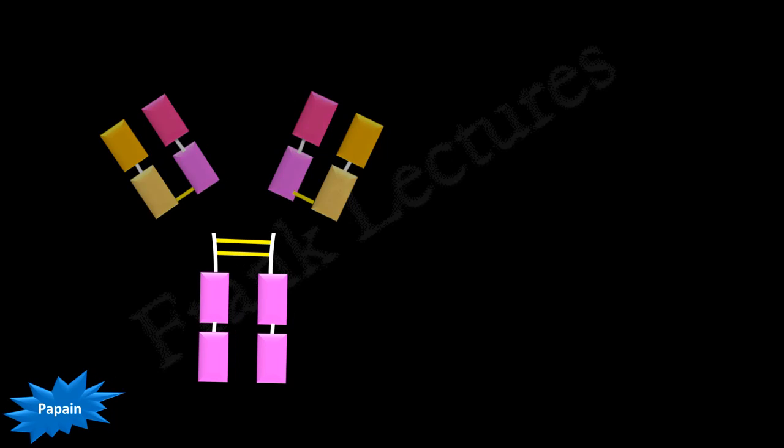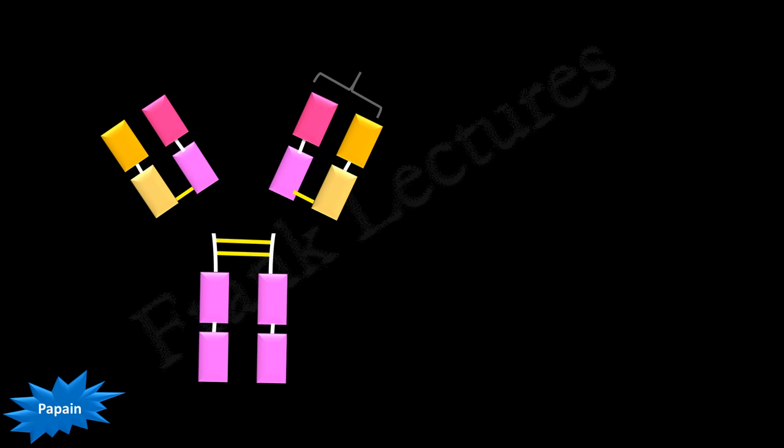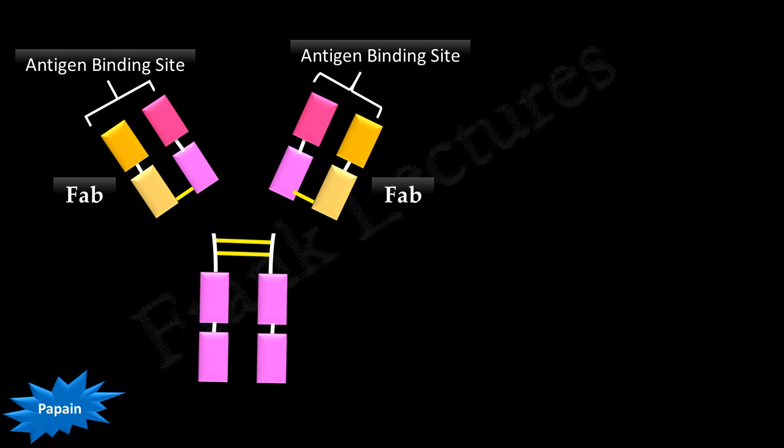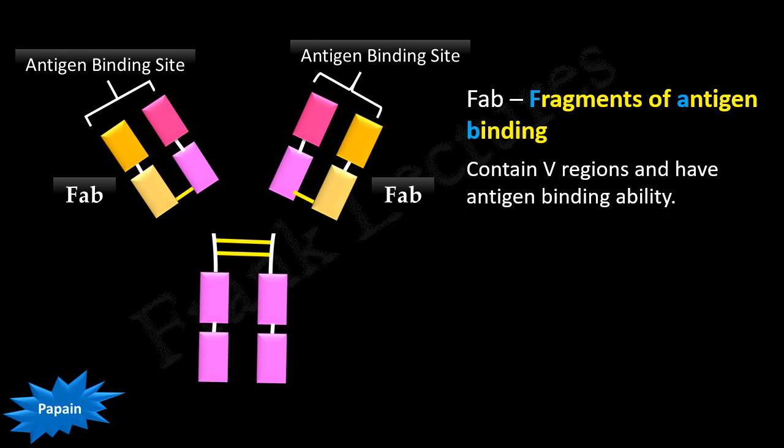As a result, two identical fragments are produced. Each of these consists of one light chain and one heavy chain held together by an interchain disulfide bond. Since these fragments have antigen binding activity, Porter called them fragment antigen binding, abbreviated as FAB. So there are two FAB fragments. The FAB fragment contains the variable regions and binds antigen.